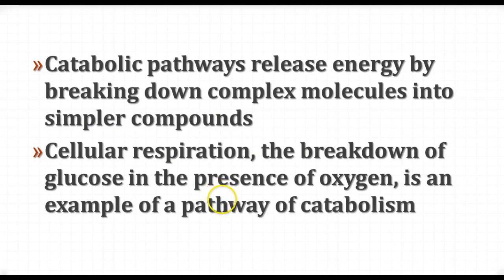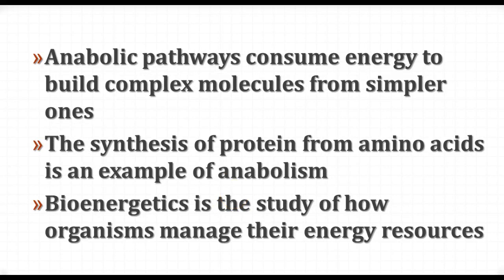We have two main kinds of pathways. Catabolic pathways are ones in which a molecule is broken down into smaller or simpler compounds. Anabolic ones are the opposite — they use energy to build more complex molecules. Cell respiration is an example of a catabolic pathway; they release energy by breaking down larger molecules into smaller ones. Anabolic pathways use energy to build more complex molecules, so protein synthesis is an example of that. Photosynthesis is also an example, although there's also a little bit of catabolism going on with photosynthesis as well.